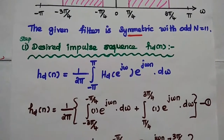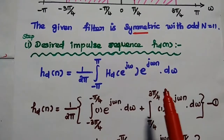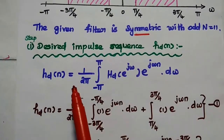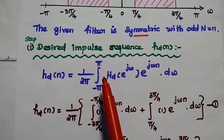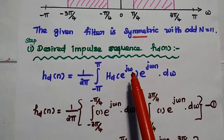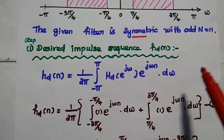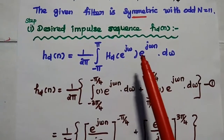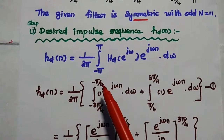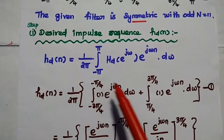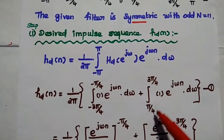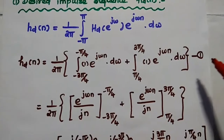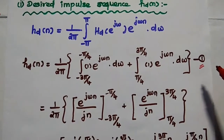Now we are going to design an ideal band pass filter using the Fourier series method. The first step is to find the desired impulse sequence, that is hd(n). The formula for that is: hd(n) = 1/(2π) × integration from -π to π of Hd(e^jω) × e^(jωn) dω. We substitute the value of Hd(e^jω), which is 1 when the limit is from -3π/4 to -π/4, and 1 when from π/4 to 3π/4. Consider this as the first equation — it is very important and will be used in the second step.